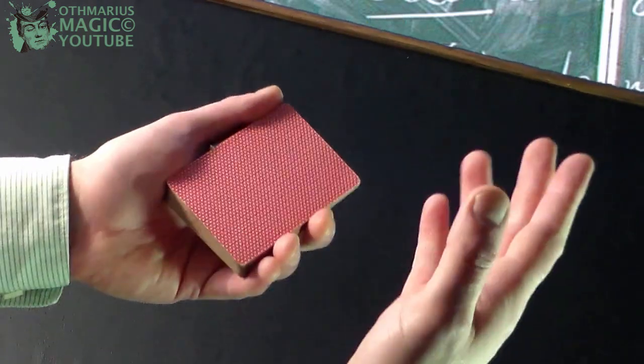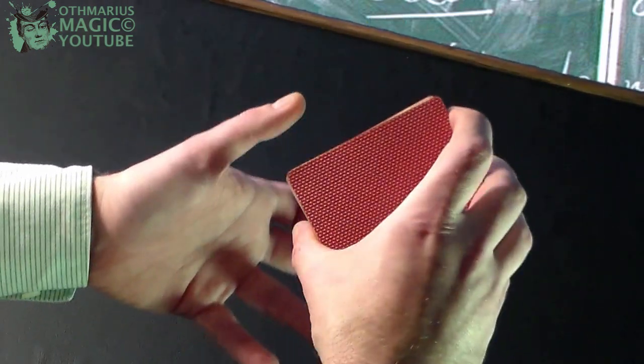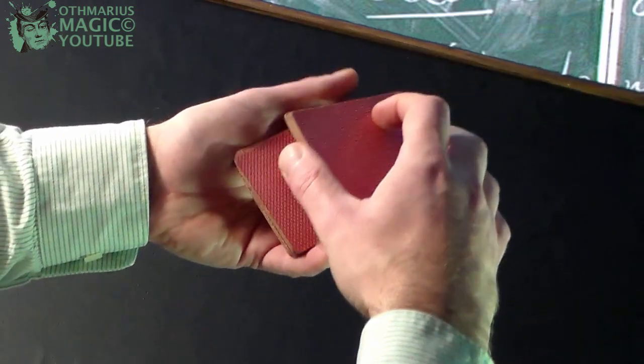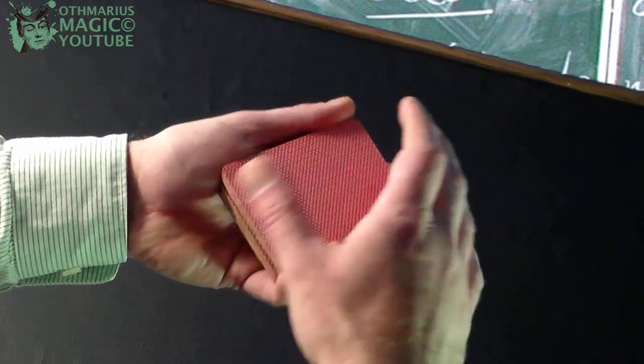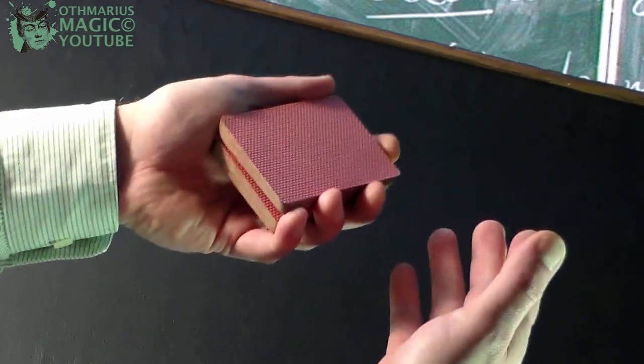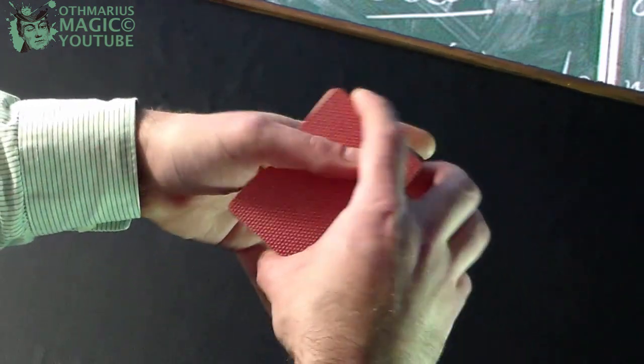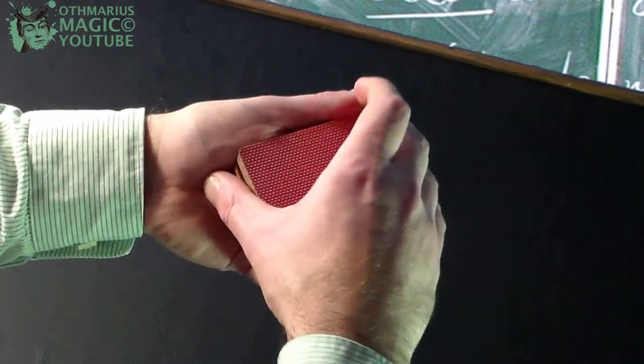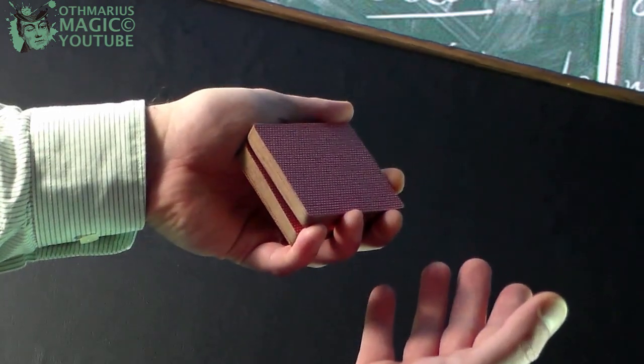Here is how you practice catching a break. Swing cut a package, bring the other package on top and catch the break under cover of squaring the cards. One more time. Swing cut a package, bring the other package on top and catch a break under cover of squaring the cards.